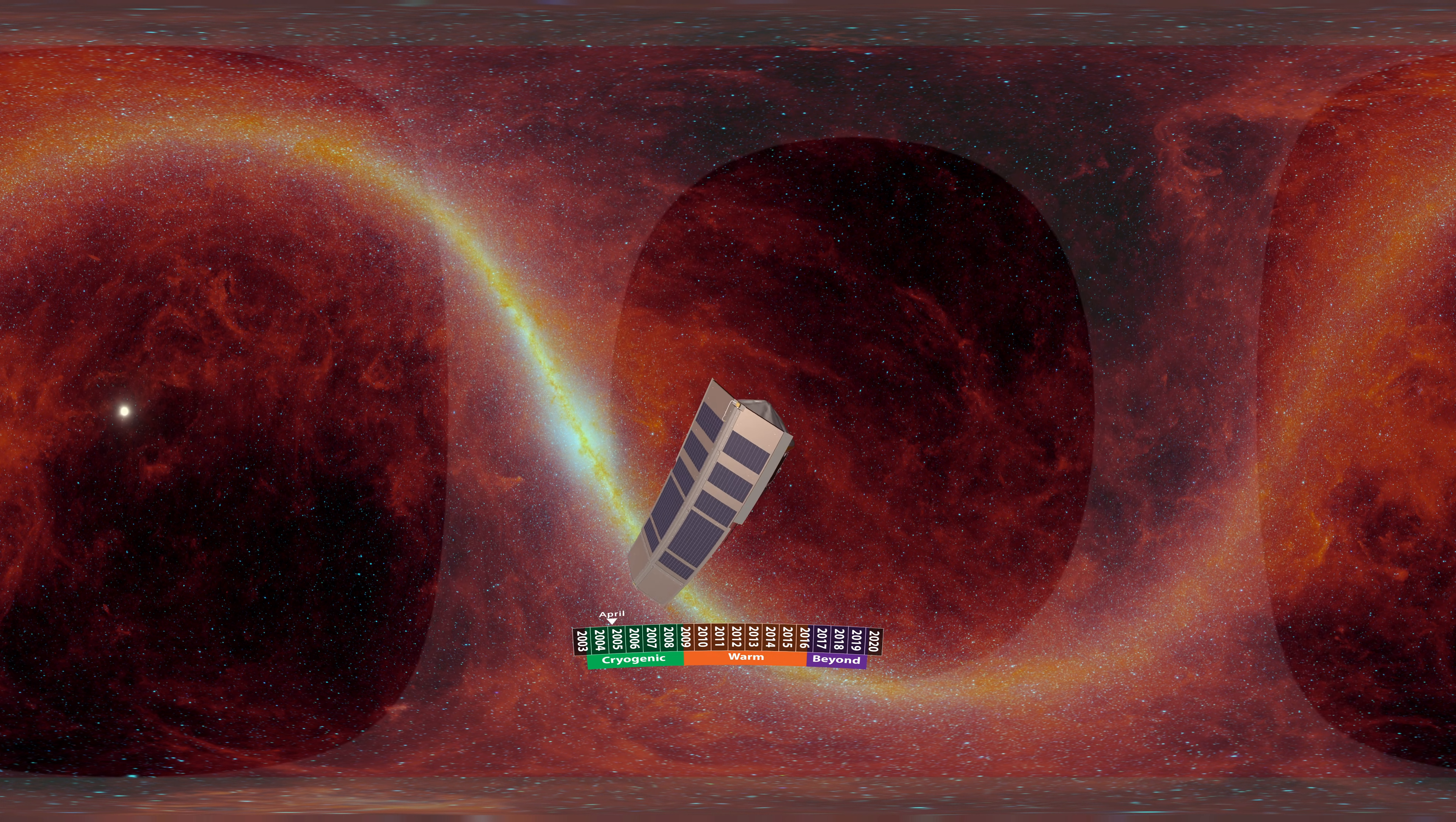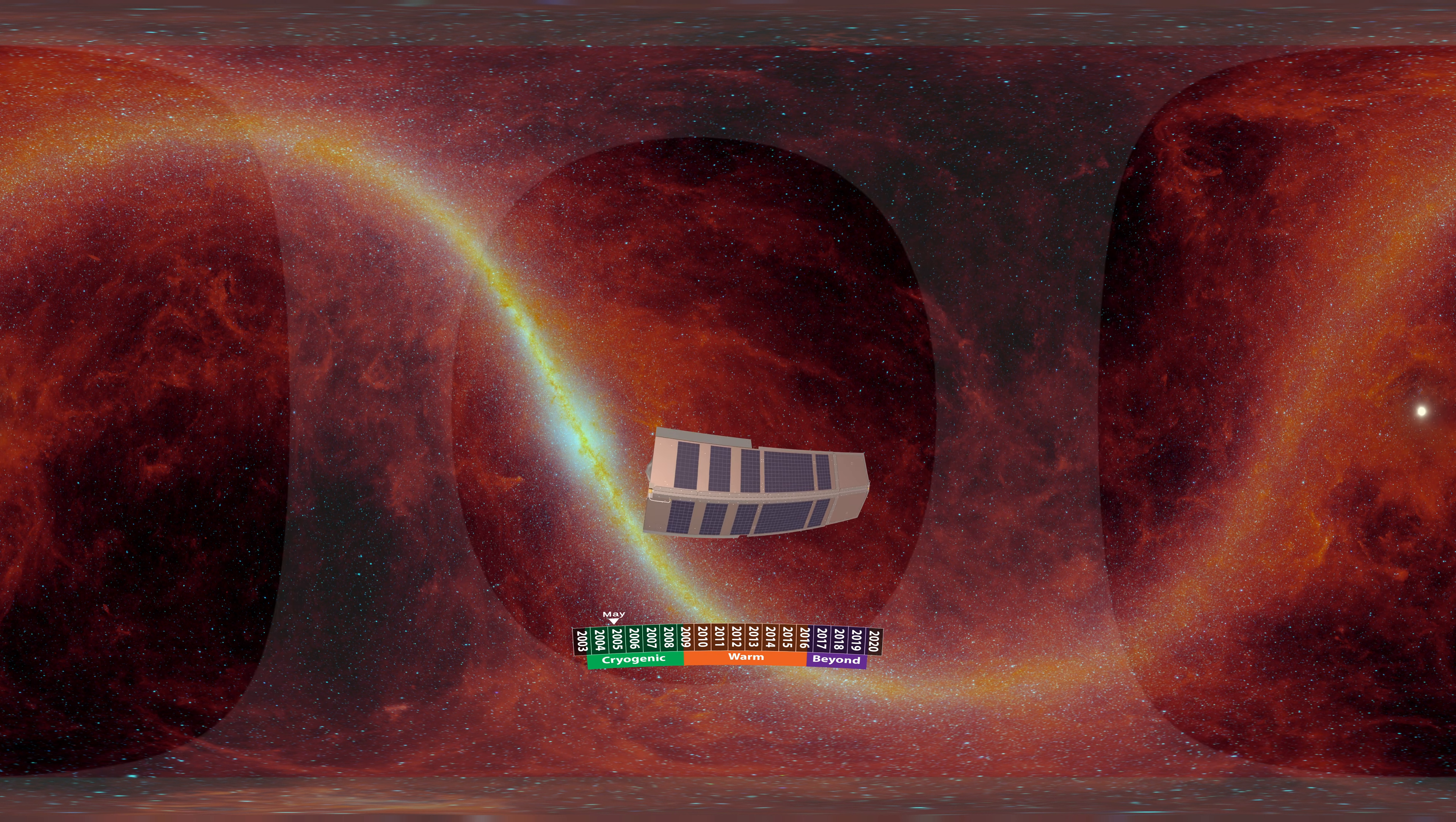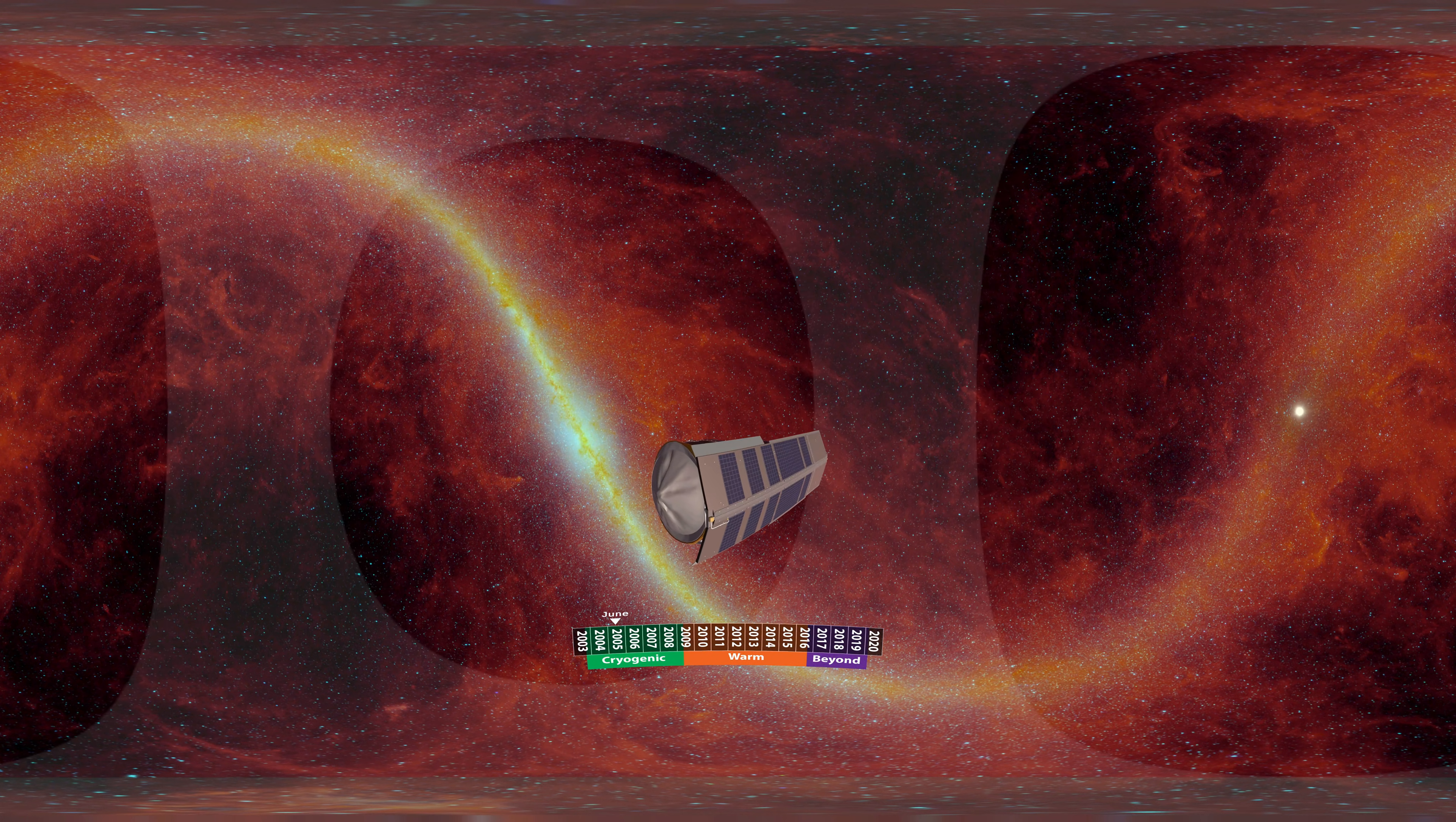In this Earth-trailing orbit, Spitzer could collect data almost continuously, making it one of the most efficient observatories ever built. It only paused to aim its radio dish toward Earth for scheduled communication breaks. This is when it sent us its accumulated data and received new instructions, directing it to examine some of the most fascinating things in the universe.